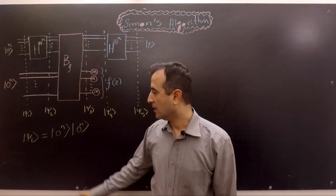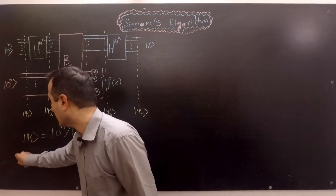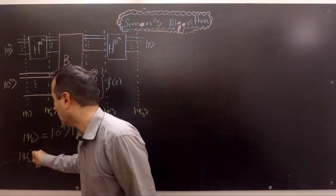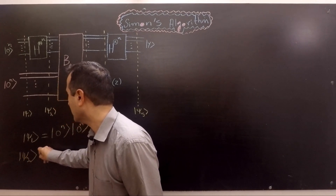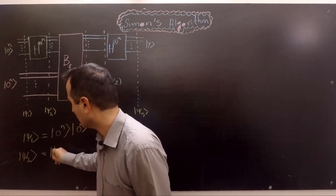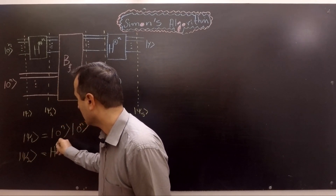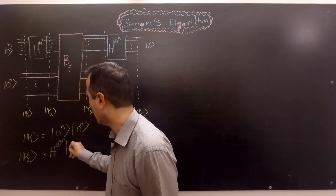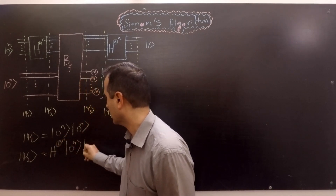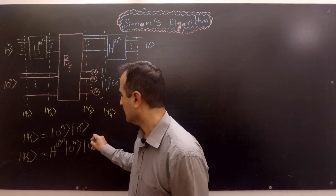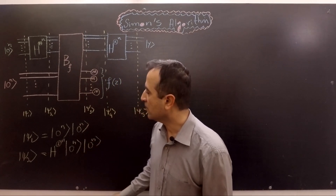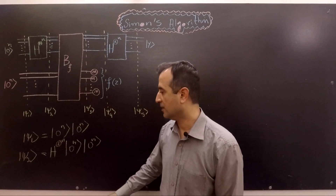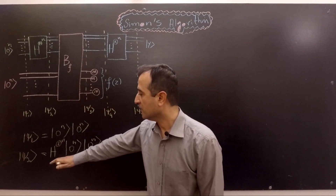In the second stage we apply the Hadamard gate on the first register — on the contents of the first register — thus creating an equal superposition of all possible strings of length n in the first register.